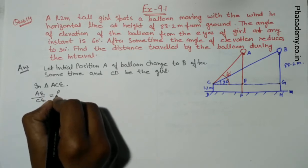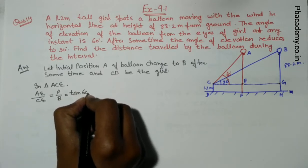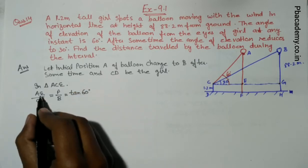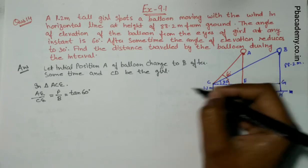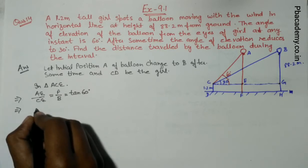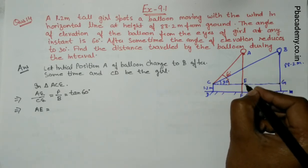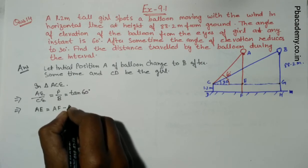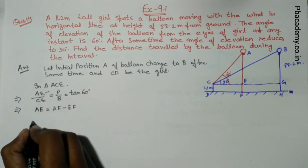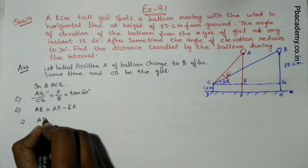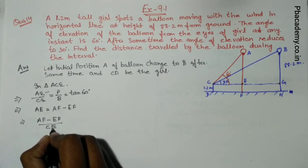AE can be split. AE is equal to AF minus EF. By using this property we put it here: AF minus EF upon CE equals tan 60.